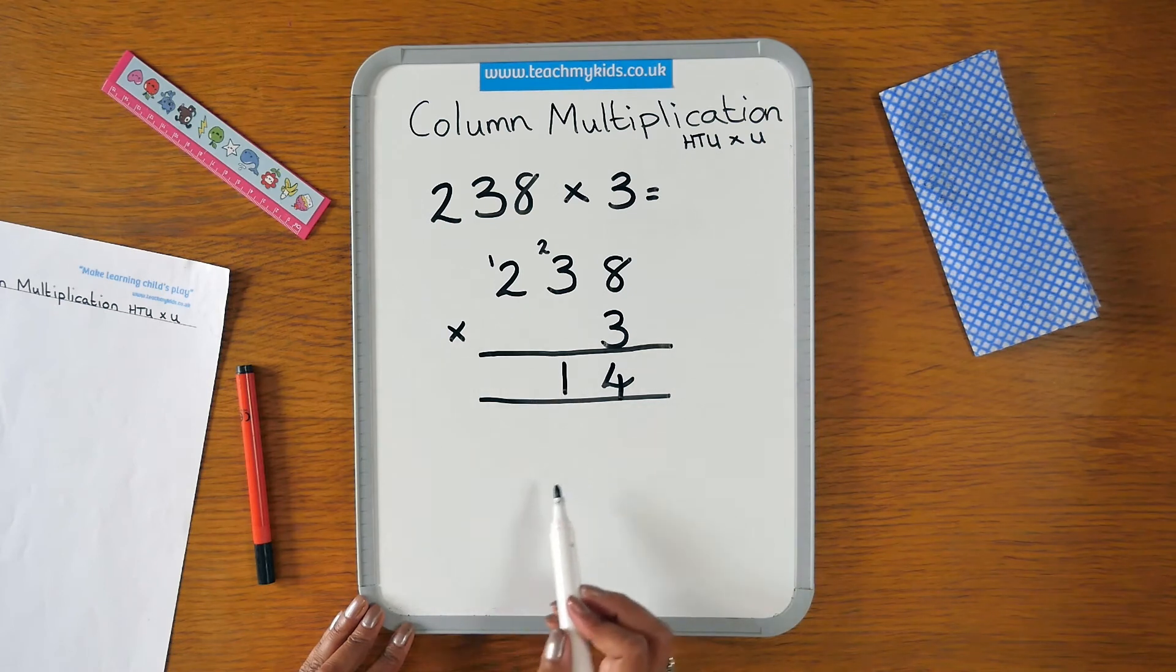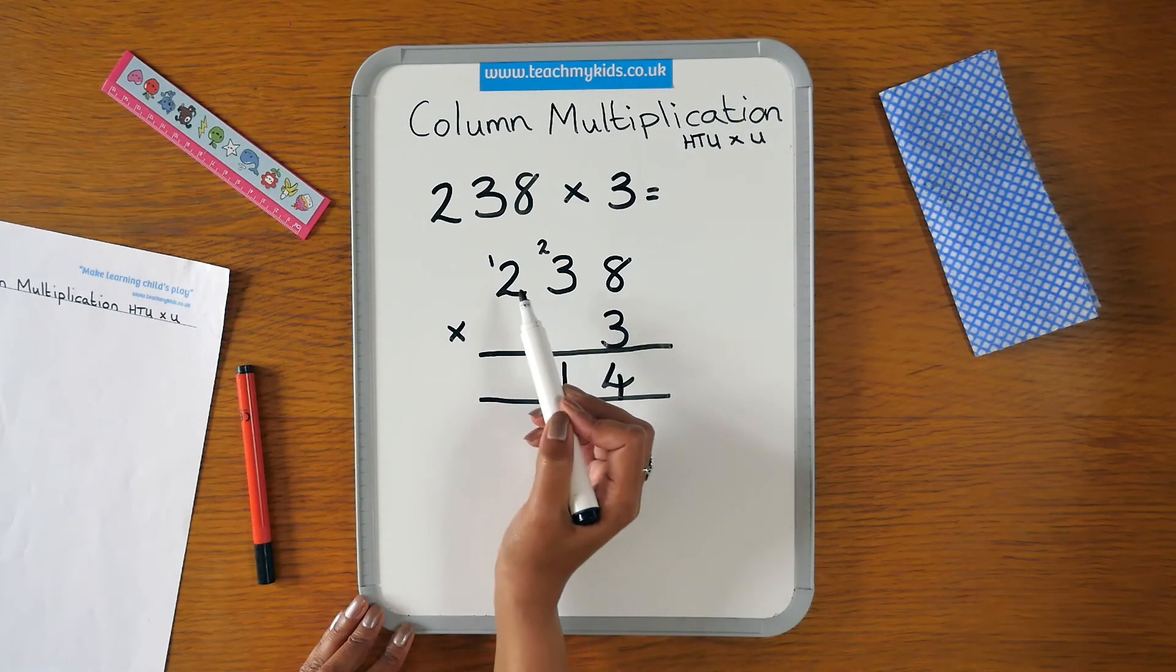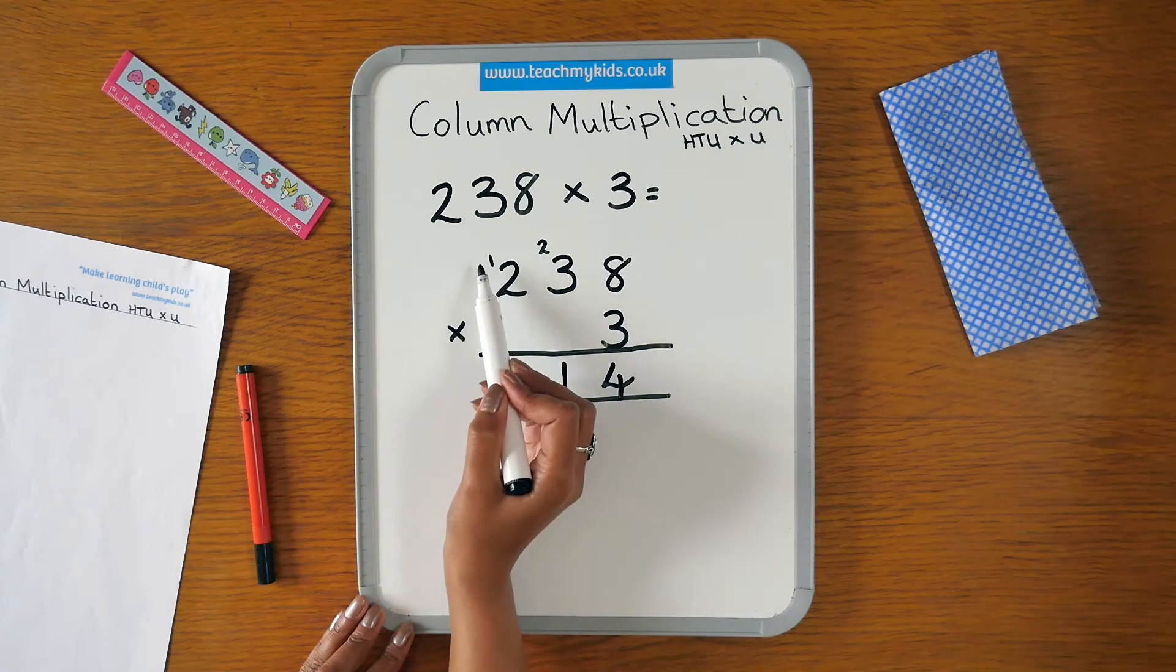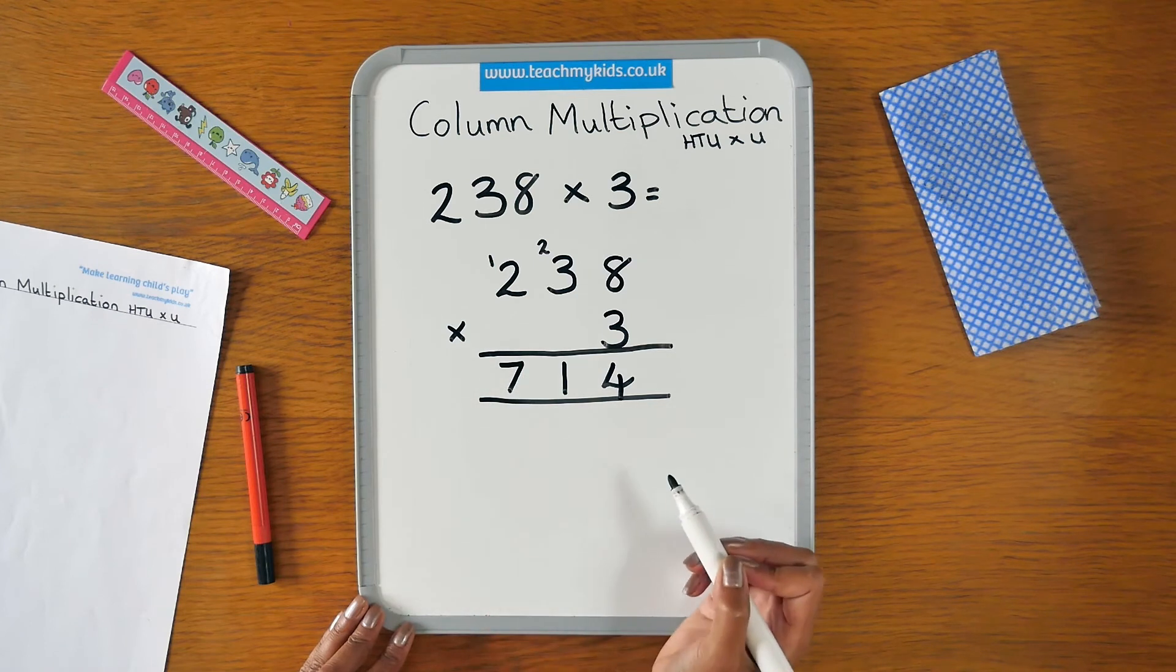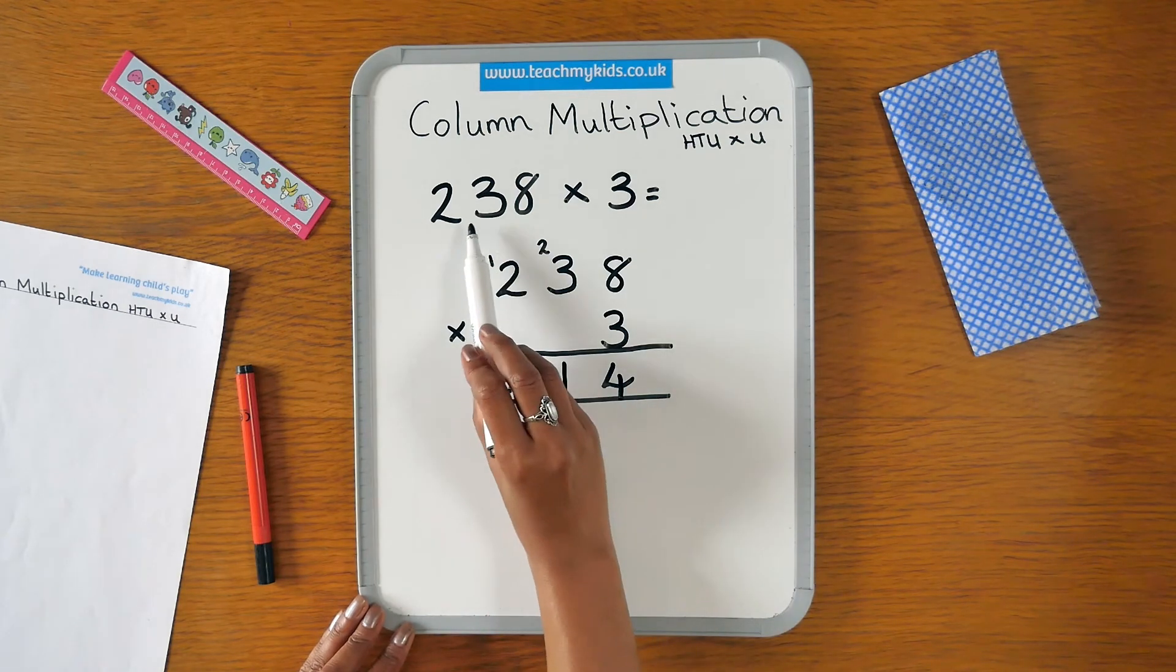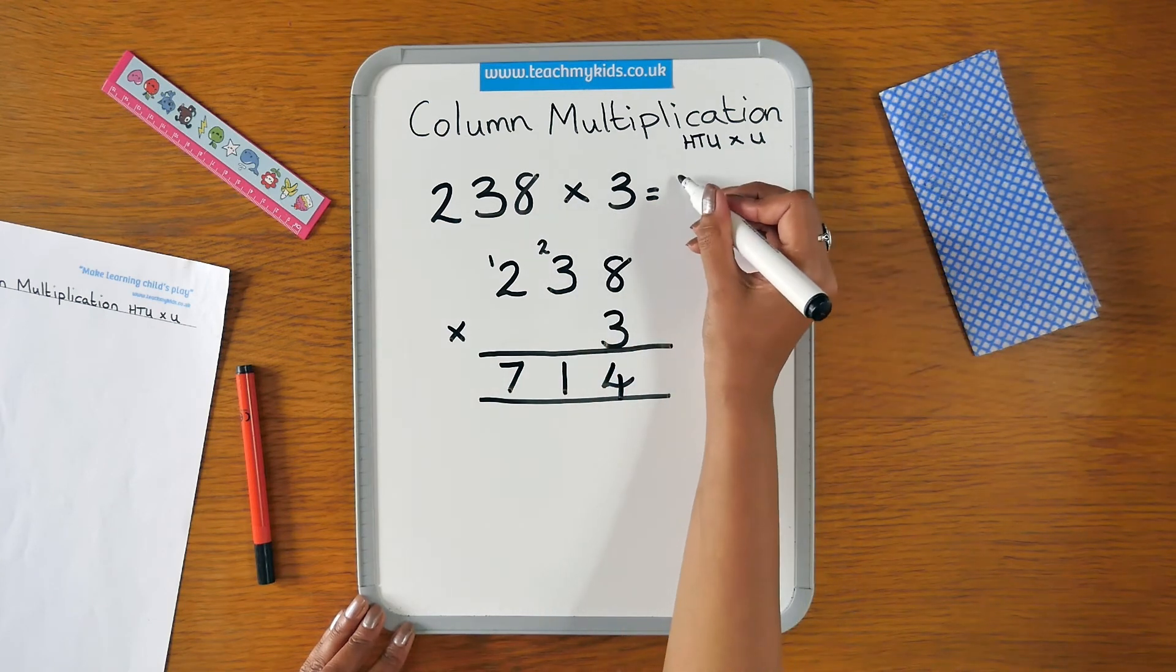Again, you can place the 1 underneath. 3 times 2 is 6 plus 1 is 7. So the answer to 238 times 3 is 714.